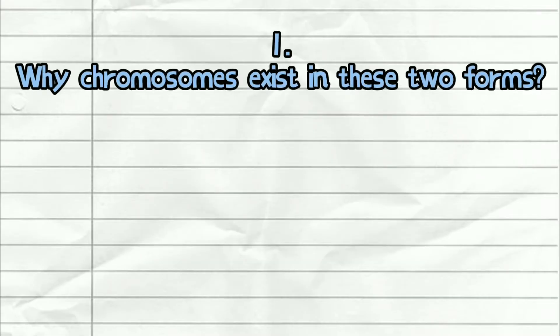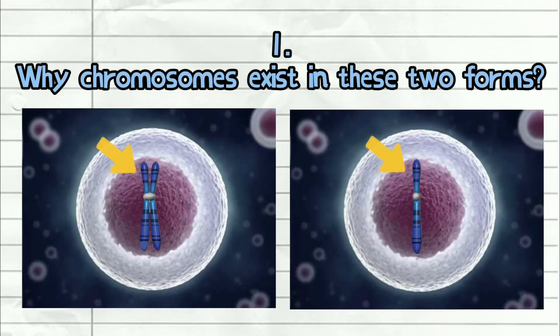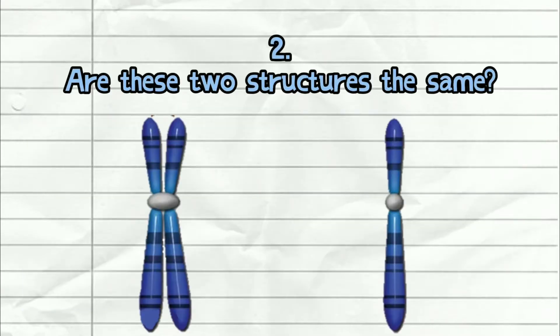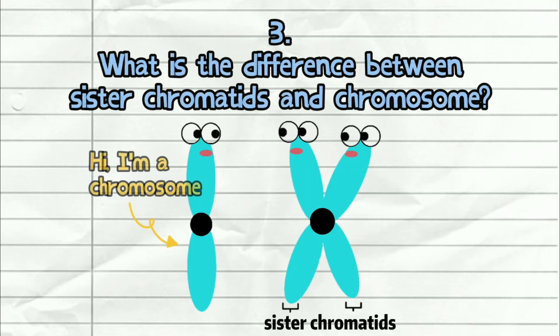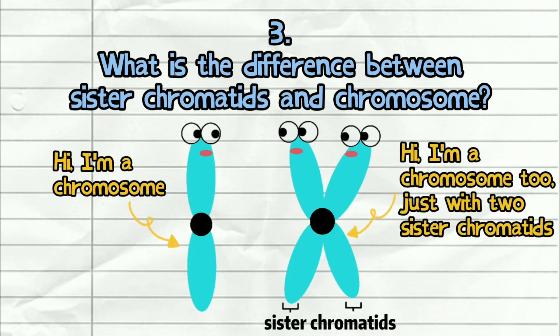Number one: why do we sometimes see chromosomes exist in this form, and sometimes in this form inside a cell? Number two: are these two structures even the same? And lastly, what's the difference between sister chromatids and a chromosome? Are they even the same thing?